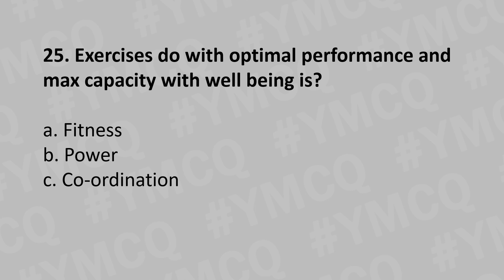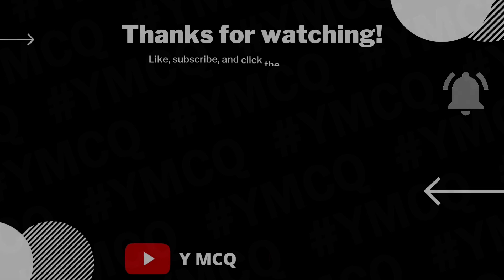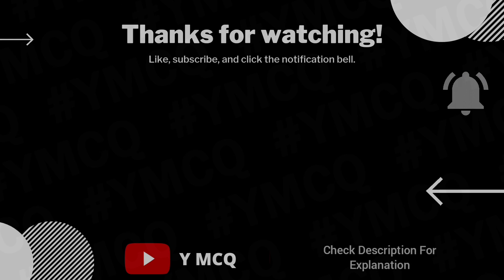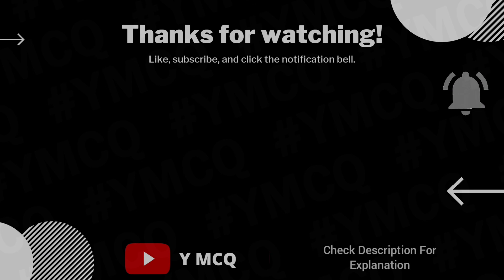Moving to our 25th question: exercises done with optimal performance and maximum capacity for well-being is: Option A: Fitness, Option B: Power, Option C: Coordination. The answer is Option A: Fitness. That's all for today. If you need any clarification on any question, comment in the comment box. I'll be back with Part 2 soon. Thank you.